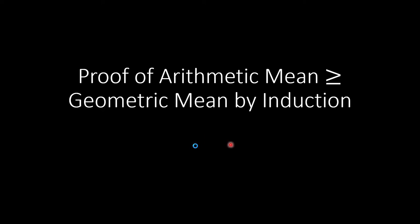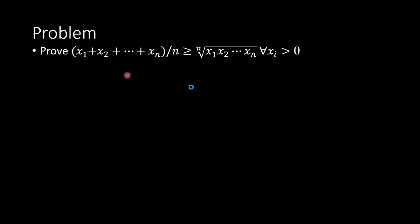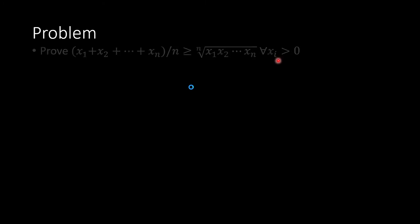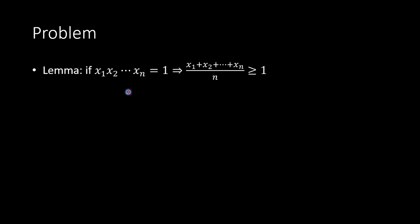Hi, my name is Dan Lowe. In this video I'm going to show you how to prove that the arithmetic mean is larger than or equal to the geometric mean by mathematical induction. The problem is to prove that (x1 + x2 + ... + xn) / n ≥ n-th root of (x1 · x2 · ... · xn) for all xi positive numbers.